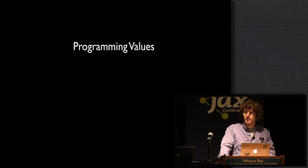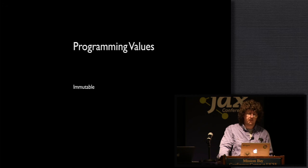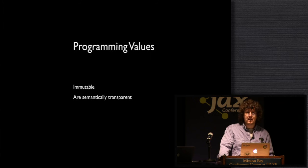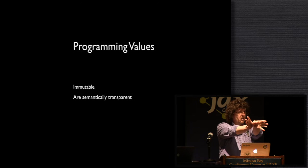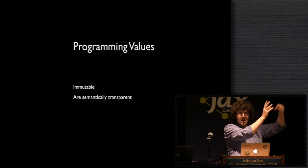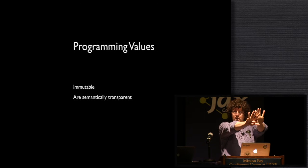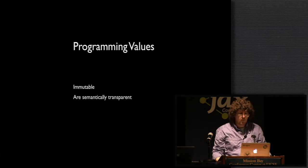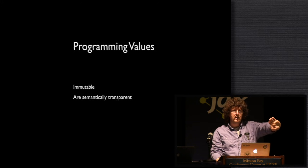So now we want to talk about values very specifically in terms of what we do in programming. For the purpose of this talk, I'm going to focus on two things. Values are immutable. And values are semantically transparent — the purpose of the value is to expose itself to you so you can do comparisons and equality tests. A value is not about encapsulating something with methods. A value is about saying: compare me to something else. I'm telling you what my precise meaning or significance is, right on the outside.